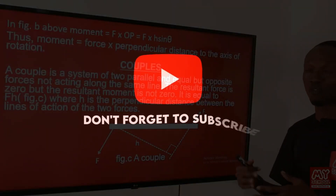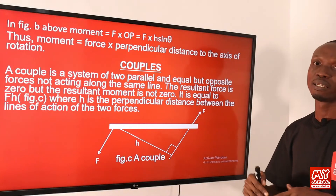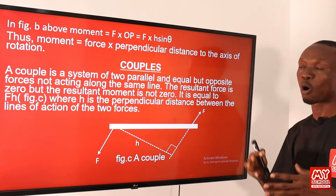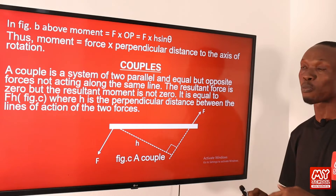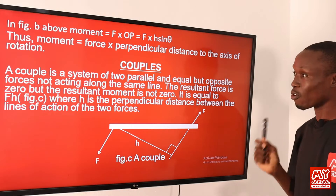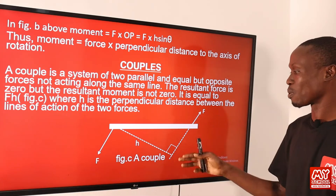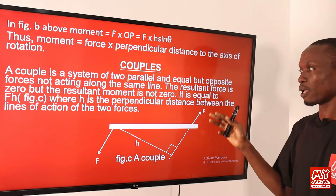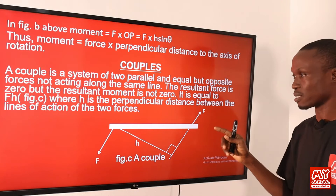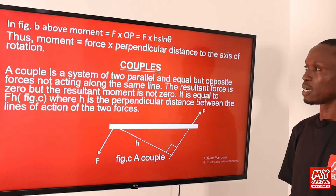Sometimes a system of forces can only cause an object to rotate without producing any linear motion. This system of forces is referred to as a couple. A couple is a system of two parallel, equal, but opposite forces not acting along the same line. The resultant force is zero, but the resultant moment is not zero. H stands for the perpendicular distance between the lines of action of the two forces.